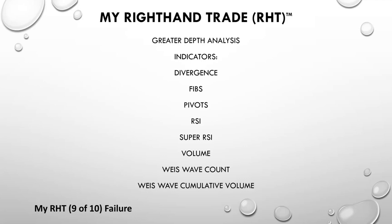Larry Pesavento is another person I love — he's spoken at Denver Trading Group probably three times. Fibonacci levels are important: .38, .618, .786. Whether you use Fibonacci series levels or pivots, it's up to you — you just want to know where support and resistance is at multiple levels.